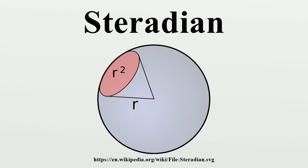Regarding SI multiples: a complete sphere subtends 4π ≈ 12.566 steradians, so multiples larger than a decasteradian are rarely used. Any range in excess of the whole area of a sphere would only be needed in conjunction with non-Euclidean spherical geometry, and even then usually only in the context of non-local analysis. As such, solid angles over 4π are used exceedingly rarely in the literature.